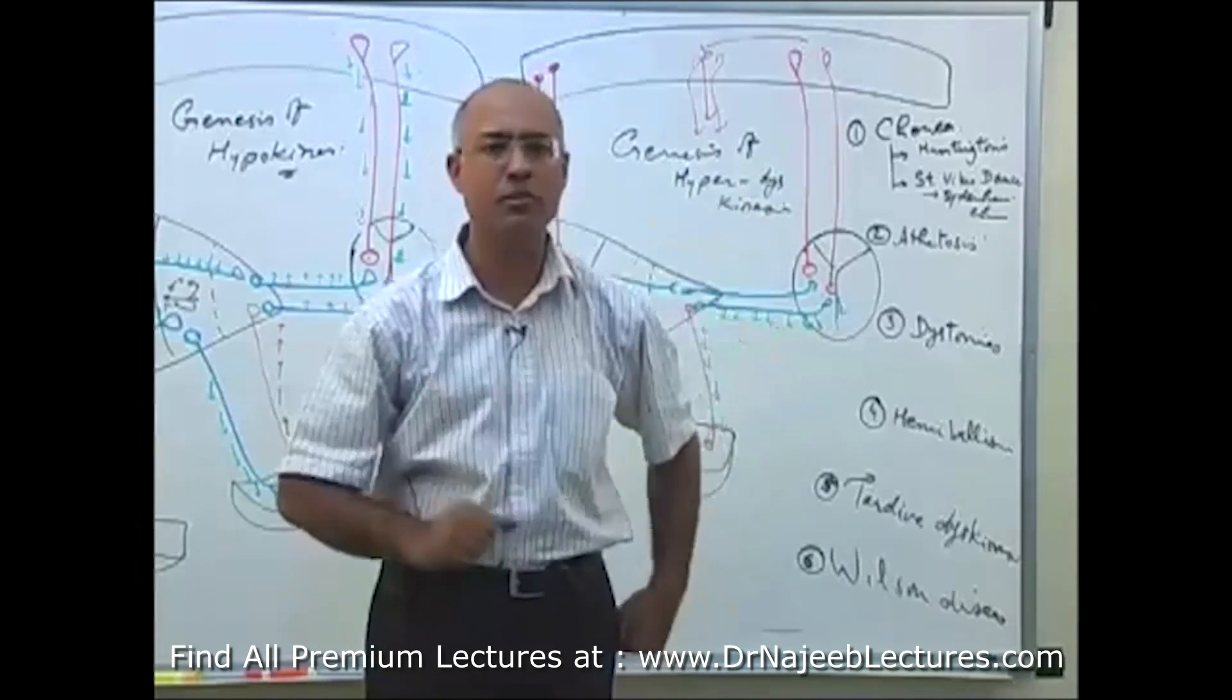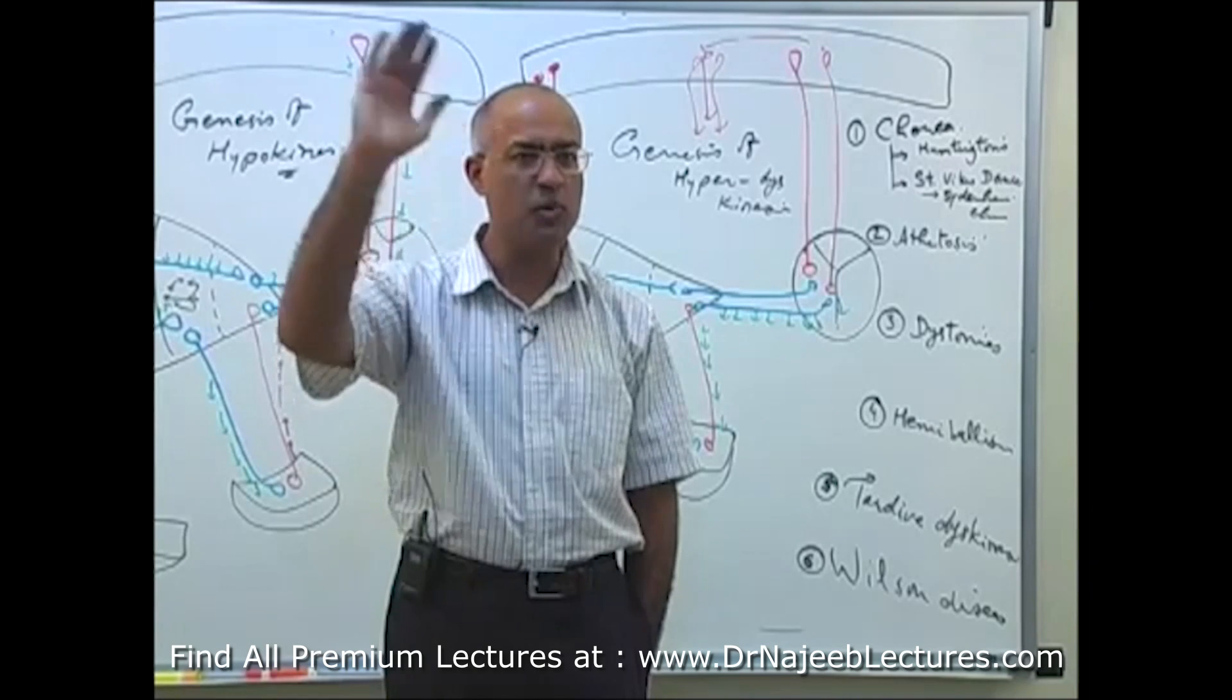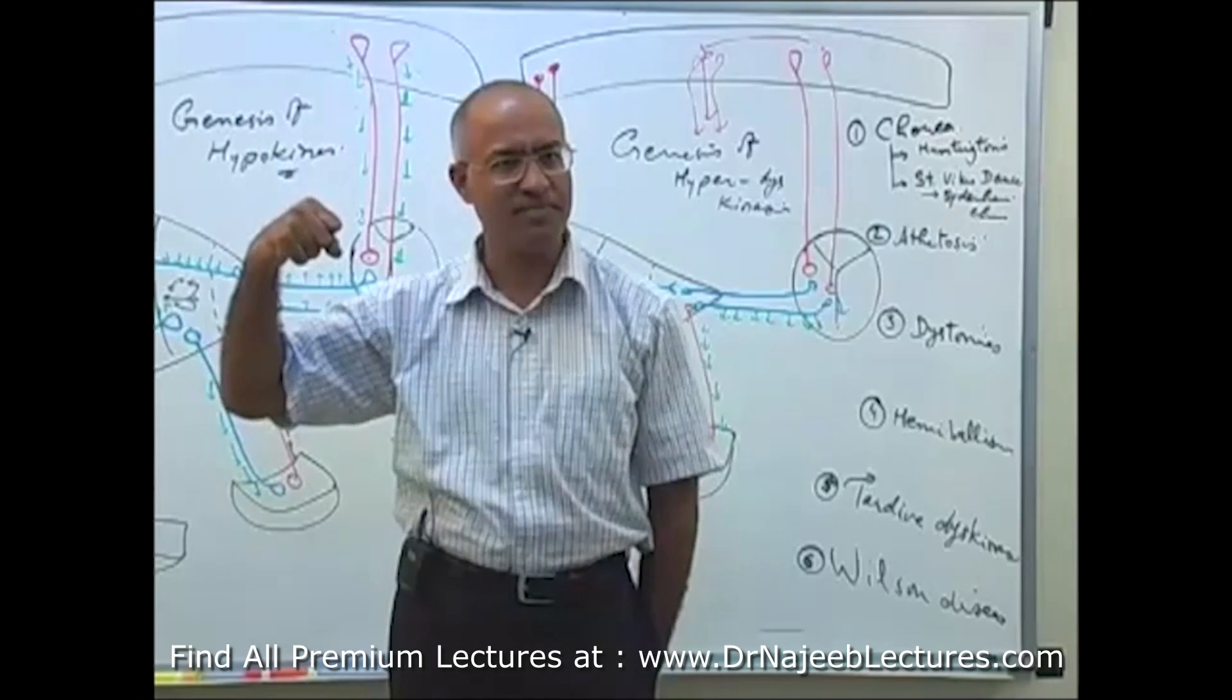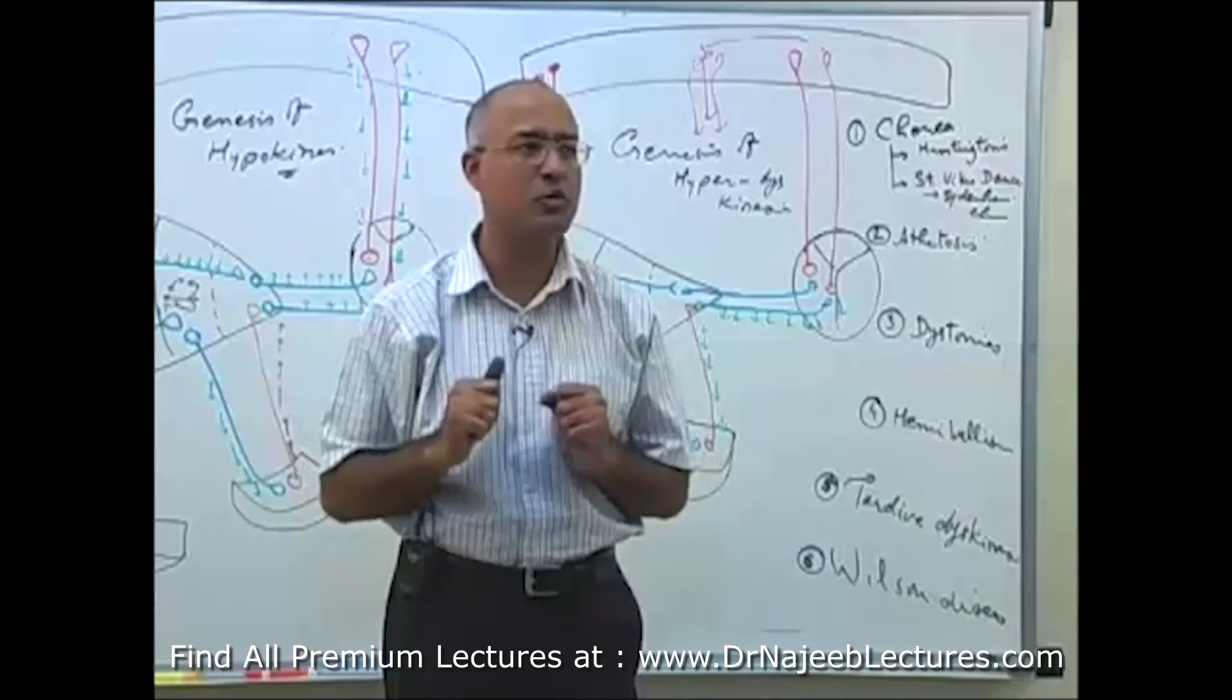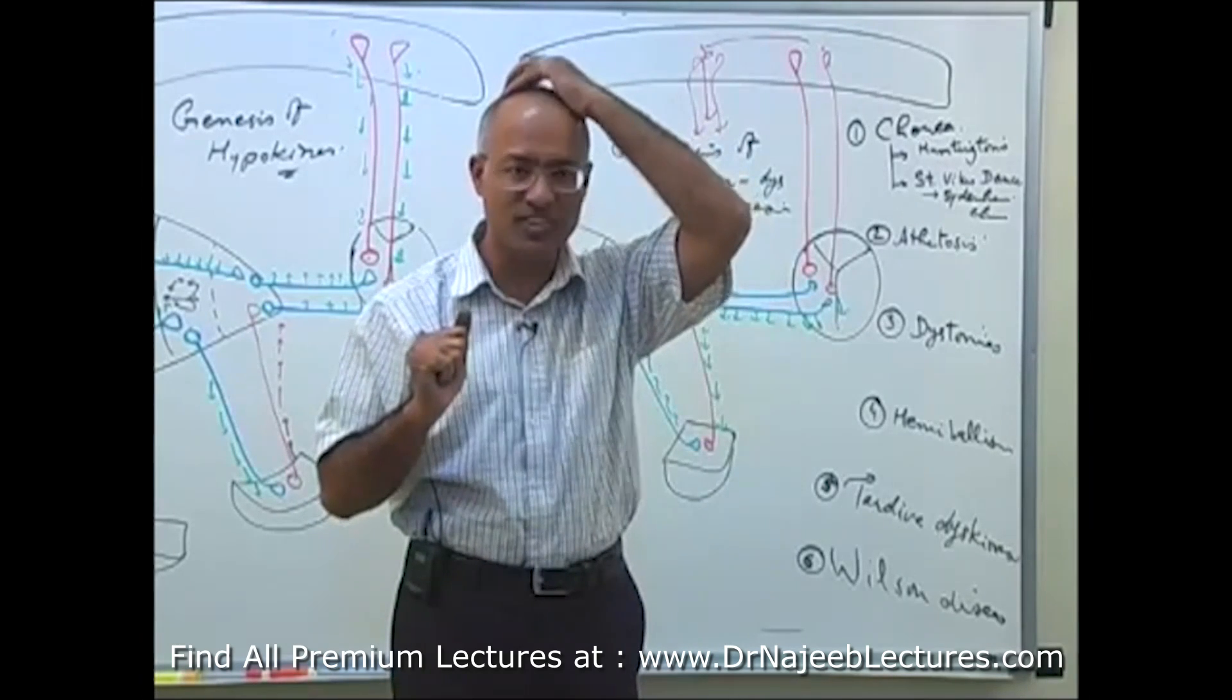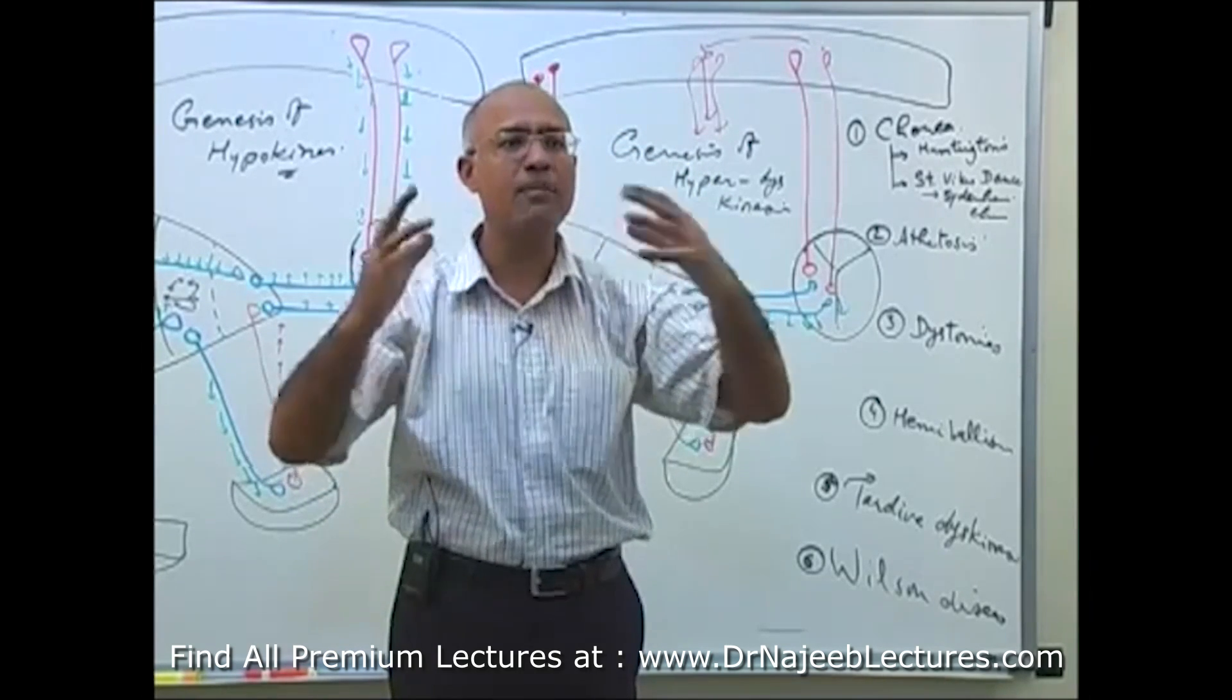Now, in your central nervous system, you have different programs. For example, this is a program to raise your hand and salute someone. This is the program to bye-bye. There's another program you can run. There's another program. Now, these are different programs which are there, and you only use them in specific situation.